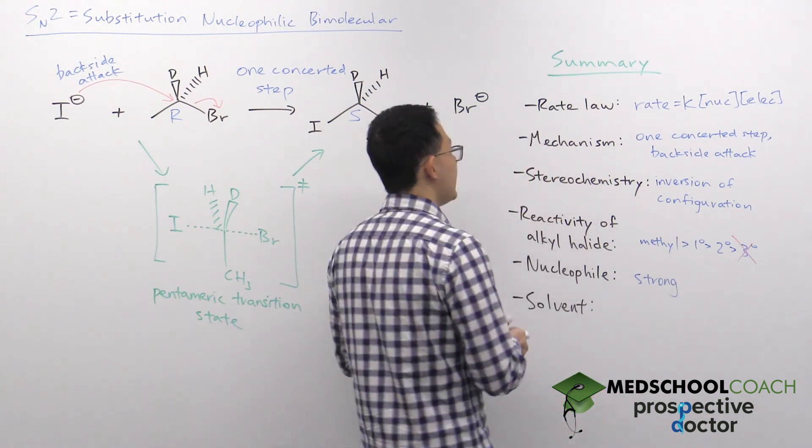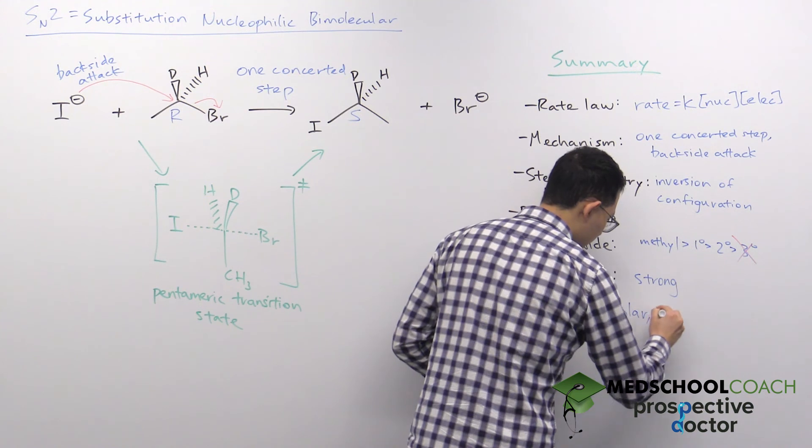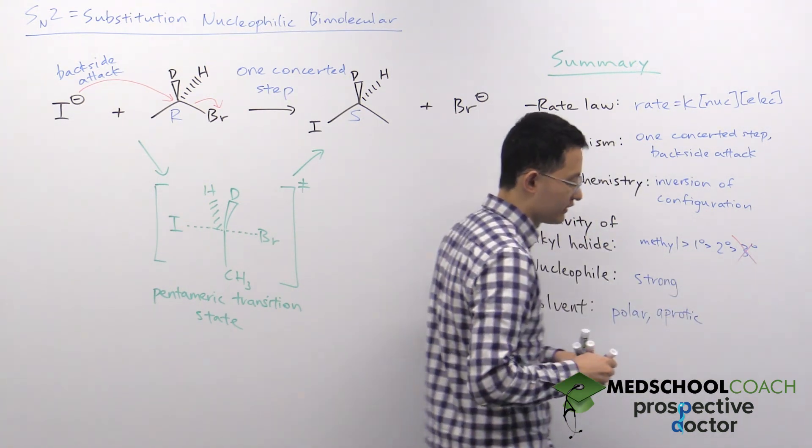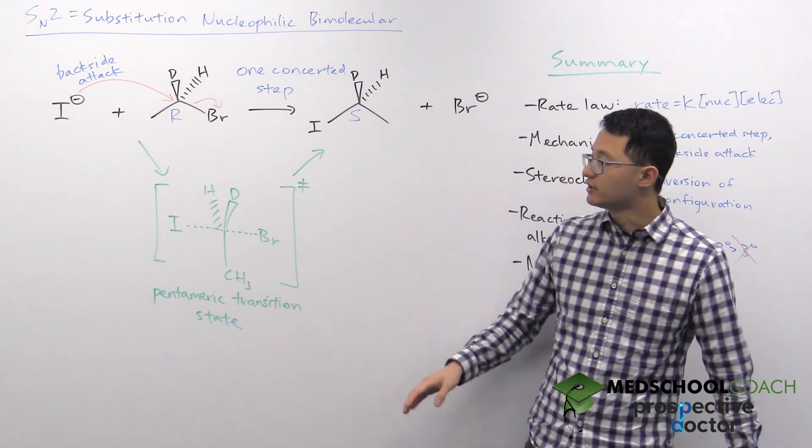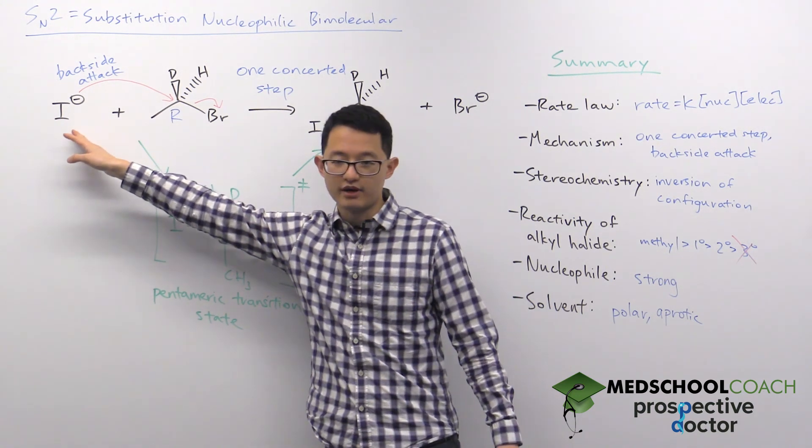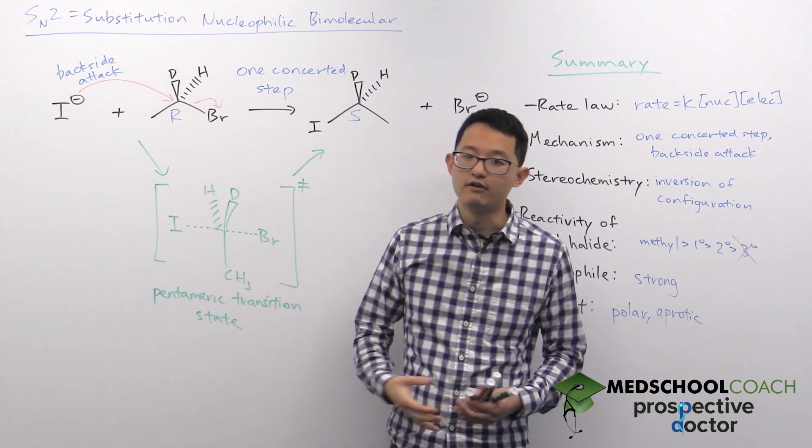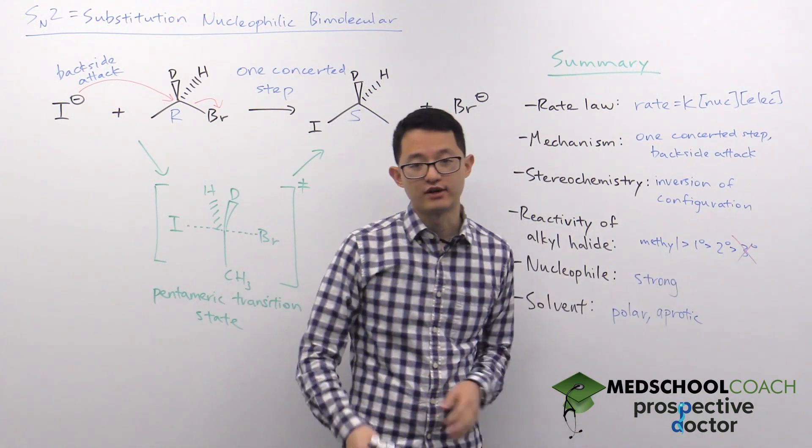And in this case, for SN2 reactions, you actually want the polar aprotic solvent. The reason why you don't want the polar protic solvent is because the polar protic solvent is going to form hydrogen bonds with your nucleophile. And if it forms hydrogen bonds with your nucleophile, it's weakening the strength of your nucleophile, which we've already discussed, we don't want because we want a strong nucleophile.